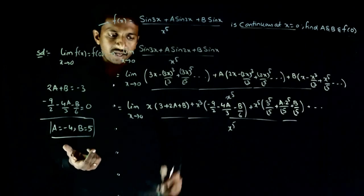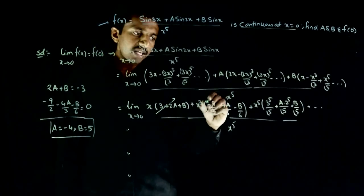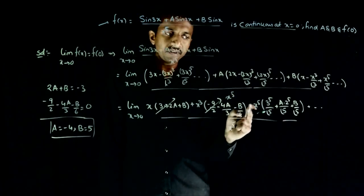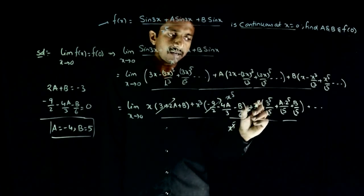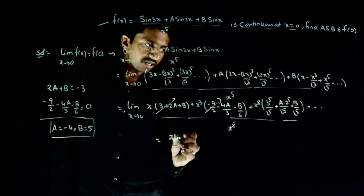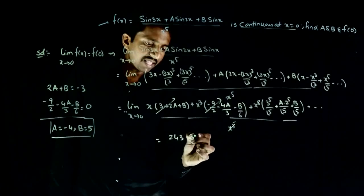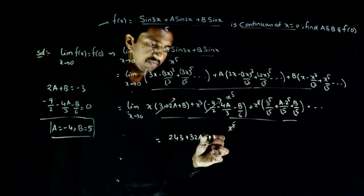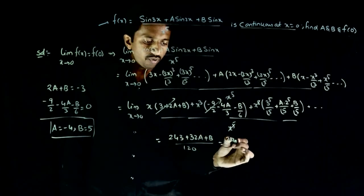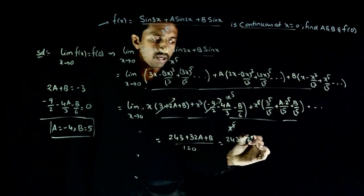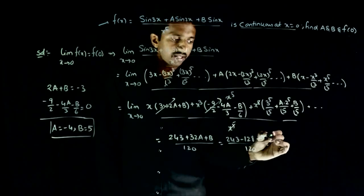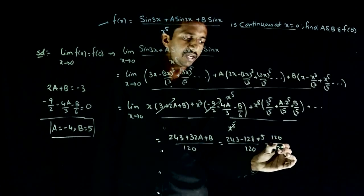Once you get a equals minus 4 and b equals 5, you can see that for these two values of a and b, this term will also become zero, this term will also become zero. What remains is the x power 5 term. Now in the denominator you also have x power 5, in the numerator you also have x power 5. These two will cancel. And the value of this limit is 243 plus 32a plus b by 120. Put the values of a and b. That is equal to 243 minus 128 plus 5 by 120. This becomes 120 by 120 which is equal to 1.